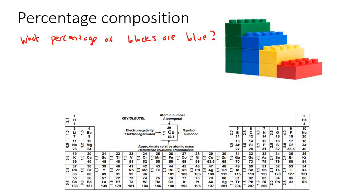All that you would do is count the number of blocks — there are 10 blocks — and then out of those 10 blocks, three of them are blue. So you say 3 out of 10 multiplied by 100, because you want to get a percent, and that gives you 30%.